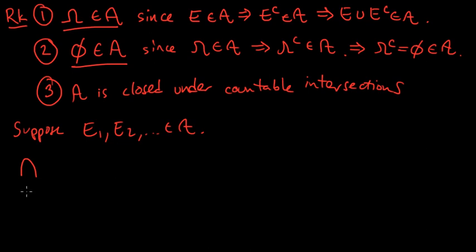Then the intersection, this is the thing we want to show, is in A. We can write this as the intersection, so any set is equal to the complement of its complement. So we can rewrite this in this way, and by DeMorgan's laws, if you know your set theory laws, DeMorgan's laws say, the intersection of the complements equals the union, I'm sorry, equals the complement of the unions. The intersection of the complements equals the complement of the unions.